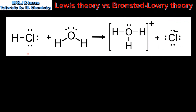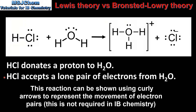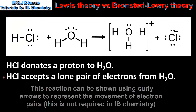In our first example we have the reaction between HCl and H2O to produce the hydronium ion and the chloride ion. In terms of the Bronsted-Lowry theory, the HCl donates the proton to H2O, so HCl is acting as a Bronsted-Lowry acid. In terms of the Lewis theory, the HCl accepts a lone pair of electrons from H2O, so HCl acts as both a Bronsted-Lowry acid and a Lewis acid.